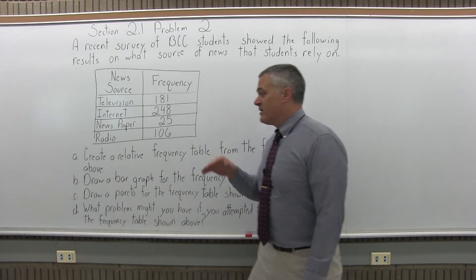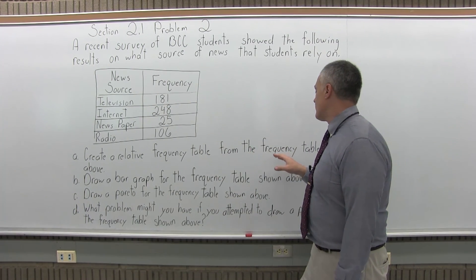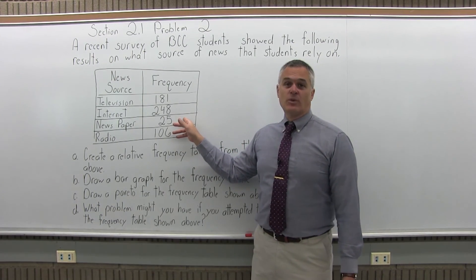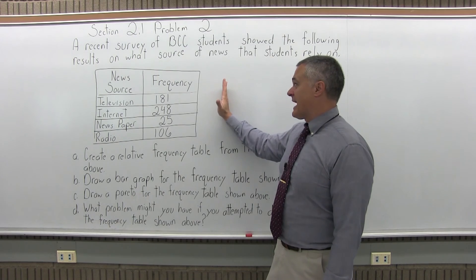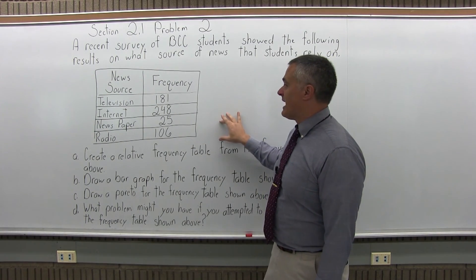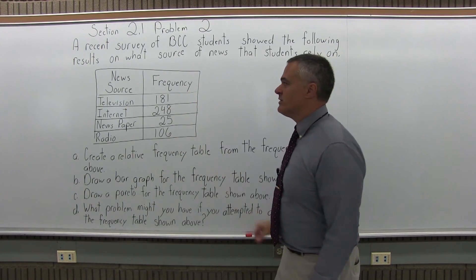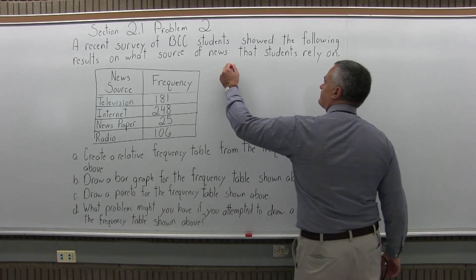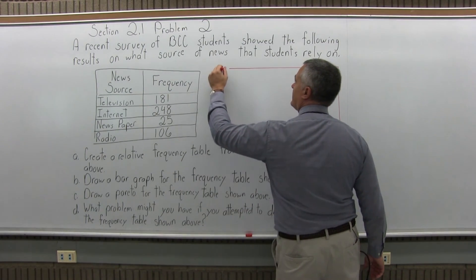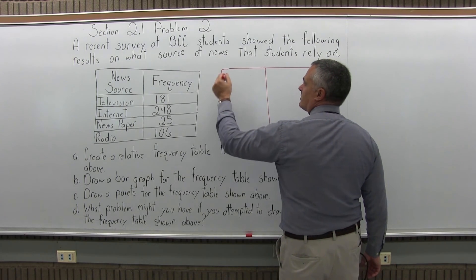There are four parts to this. Part A says create a relative frequency table from the frequency table shown above. To turn this into a relative frequency table, we're going to add a column onto it. That column is going to have some ratios of these frequencies over the total of all the frequencies. Let me set up a similar table right next to this with one additional column.